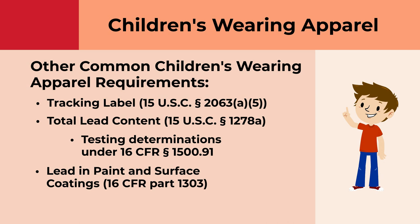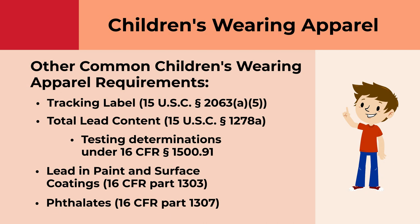Congress permanently banned children's toys and child care articles that facilitate sleeping, feeding, sucking, or teething in children ages three and younger that contain eight specified phthalates in amounts greater than 0.1%. Phthalates are chemicals used in plastics and plasticized components such as buttons, snaps, or zippers. A common example of a garment subject to both Part 1610 and the phthalates rule are children's bibs. For more information, visit cpsc.gov/phthalates.